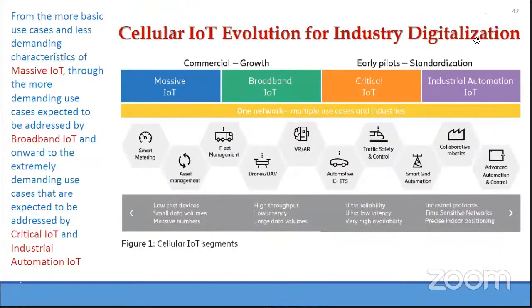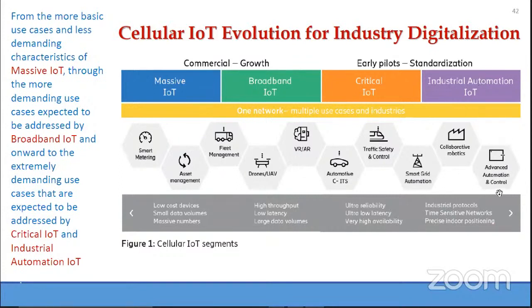The cellular IoT evolution for industry digitalization ranges from massive IoT (basic use cases — low cost devices, small data volumes, massive numbers) to broadband IoT (more demanding — high throughput, low latency, large data volumes) to critical IoT and industrial automation IoT (ultra reliability, ultra low latency, very high availability). Applications include advanced automation, collaborative robotics, traffic safety, automotive, and smart grid automation.